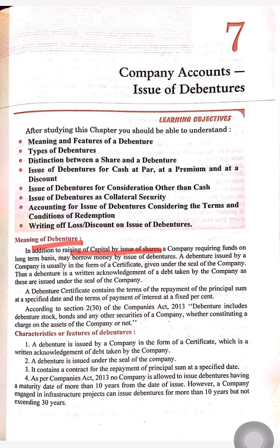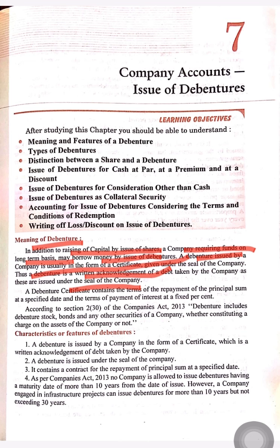In addition to raising capital by issue of shares, a company requiring funds on a long-term basis may borrow money by issue of debenture. A debenture issued by a company is usually in the form of a certificate given under the seal of the company. Thus a debenture is a written acknowledgement of a debt taken by a company. In shares we acquire capital, but by debenture we acquire loans. Same process is there — as shares are issued, in the same process debentures are issued, and by that the company can raise funds for their long-term needs.